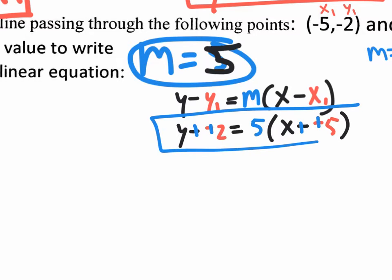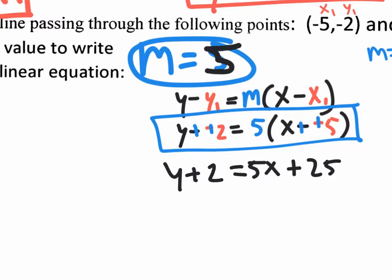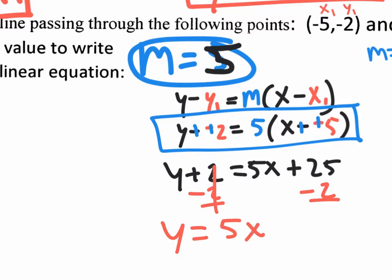Those minus minus signs need to change to plus plus — write that in your answer spot for point slope form. Now to get rid of the parentheses, distribute: 5 times x is 5x, and 5 times 5 is 25. Bring down the y plus 2. For slope intercept form, subtract 2 from both sides, giving y equals 5x plus 23.